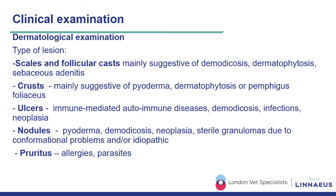After focusing on lesion distribution, the type of lesion should also be evaluated. Scales and follicular casts are mainly suggestive of demodicosis, dermatophytosis, or less commonly sebaceous adenitis. Crusts are mainly suggestive of pyoderma but can also be seen in dermatophytosis and pemphigus foliaceus. Ulcerations suggest immunomediated diseases but can also occur with demodicosis or deep mycosis. Nodules can be due to pyoderma, demodicosis, neoplasia, or sterile granulomas. The presence of pruritus should drive attention towards allergies or parasites.